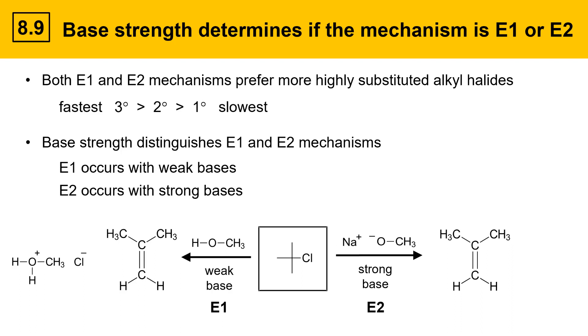The E1 and the E2 reaction can have different products based on stereochemical requirements. In this case, they're the same. The other products are methanol and sodium chloride. This illustrates the concept of using base strength to determine mechanism. Weak base gives E1. Strong base gives E2.